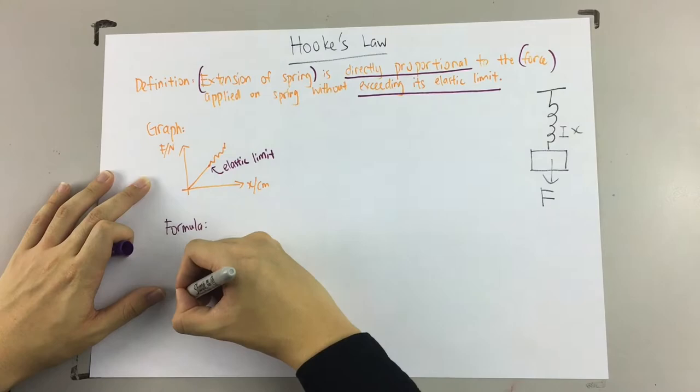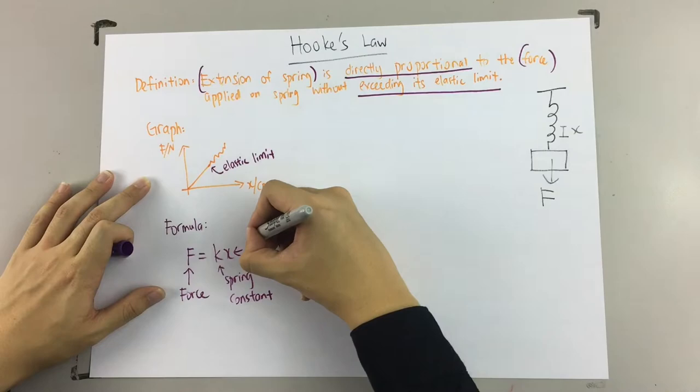After that, let's move on to the formula. The formula for Hooke's Law is f equals kx. f is force, k is spring constant, x is extension.